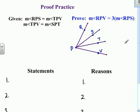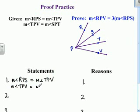Let's see if we can do this one in five steps. We're going to put down our given right away, and you probably already noticed in the given that the measure of angle TPV appears twice. The first time it's equal to RPS and the second time it's equal to SPT.